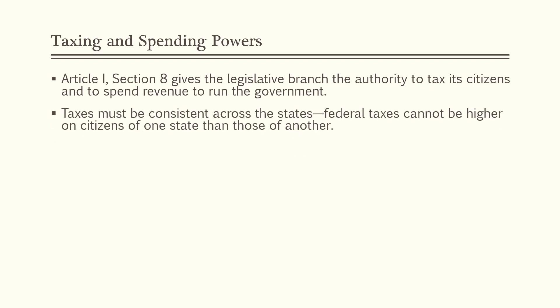Taxes have to be consistent across the states. Federal taxes cannot be higher on citizens of one state than those of another. You might ultimately pay more taxes depending on where you live, but those are based on state taxes. For example, Kansas has an income tax but states like Florida and Texas do not. Federal taxes have to be the same across the board for everyone based on their income level.